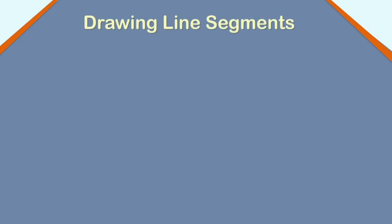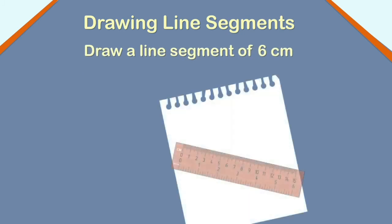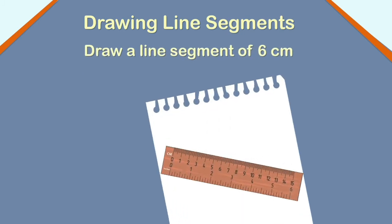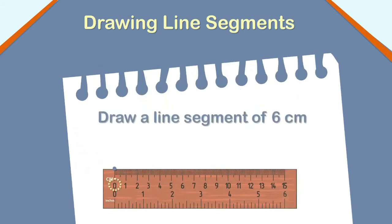I will tell you how to draw a line segment of any given measure. We need to draw a line segment of 6 cm. Follow these steps. Place the ruler on the paper and mark a point against 0 cm. Name the point as A. Count from 0 cm till 6 cm and mark a point B at 6. Hold the scale firmly and join a straight line segment to join points A and B.